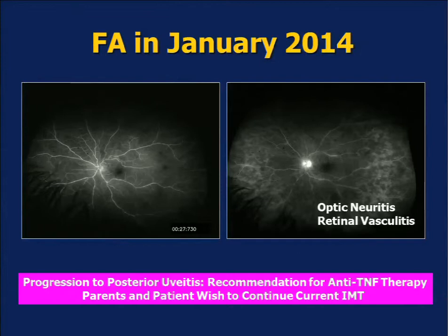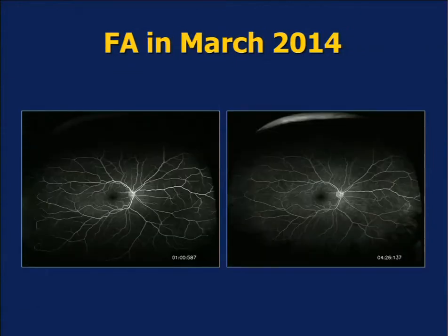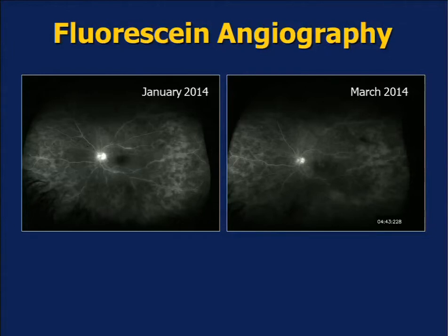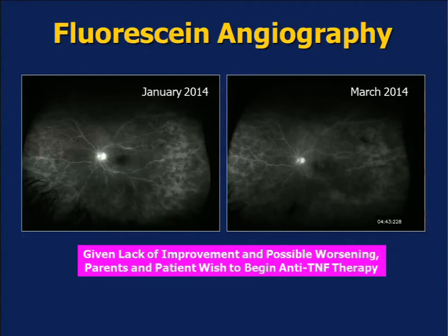We documented the progression and recommended a change to anti-TNF-alpha therapy, but the parents and patient wished to continue with current immunomodulatory therapy alone with mycophenolate. The patient returned in March 2014, just last month. The right eye remained inactive, but fluorescein angiography now showed persistent leakage and perhaps worsening. Comparing January and March fluorescein angiography, we noticed the optic neuritis was still involved with a lot of vascular leakage in the periphery. Given the lack of improvement and possible worsening, based largely on the wide-angle imaging, the parents and patient decided to begin anti-TNF-alpha therapy.